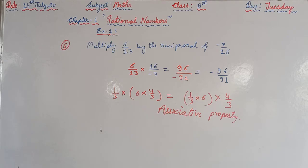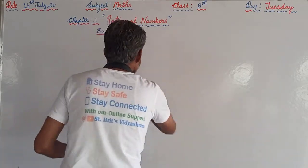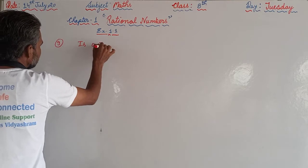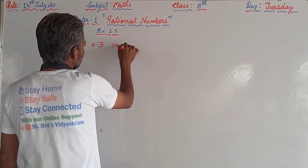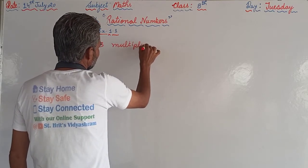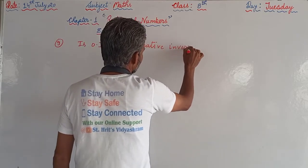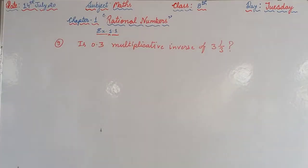In question number 9 we will try. Question number 9: is 0.3 the multiplicative inverse of 3 and 1 by 3? So this is the question and we are supposed to apply the reason why.